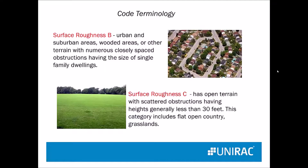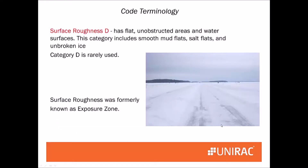Surface roughness, which used to be known as exposure zone, is about whether the wind has a chance to really pick up speed as it's bearing down on you. In surface roughness B, you have house-sized buildings and trees which slow down the wind. Roughness C is open terrain — basically an open field. And D is fairly rare: it's either right by the coast or on an ice flat, which gives no protection from the wind building up speed.